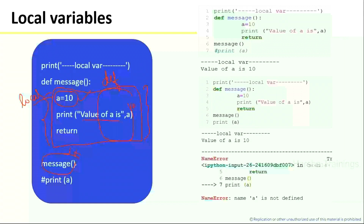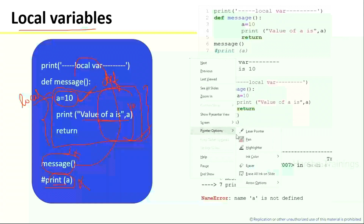Whenever I call this function, it will go to the function definition and we are assigning value 10 to variable a. If I try to access it outside of this function — print(a) — it is an error, because I cannot access the local variable outside of this block. This is called a local variable.